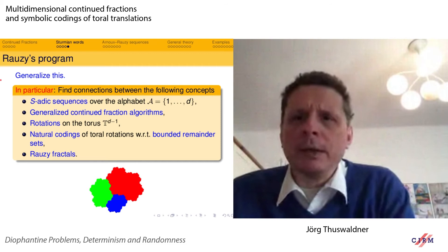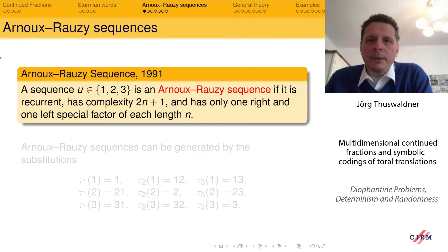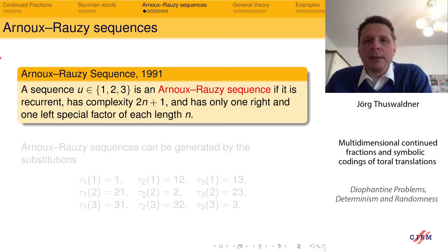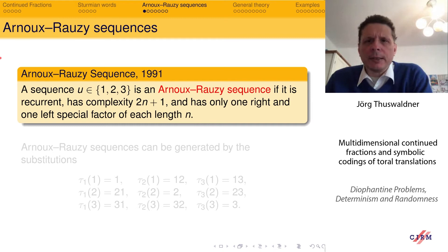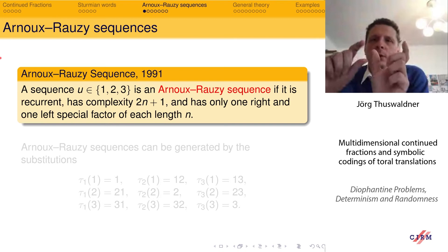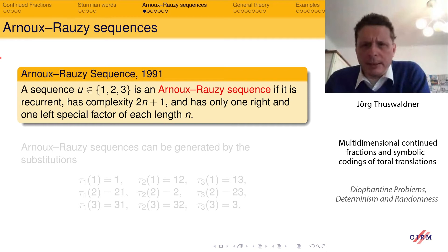So, we want to find good codings of torus translations by means of S-adic sequences coming from generalized continued fraction algorithms, with the bounded remainder sets defined as Rauzy fractals. This program was conjectured since the early 1990s. The first step was done in 1991 by Arnoux and Rauzy. They defined what is now called an Arnoux-Rauzy sequence — a sequence on three letters that is recurrent, has low complexity 2n+1, and has only one right- and one left-special factor of each length n.